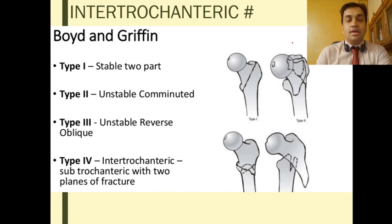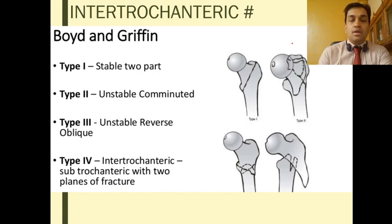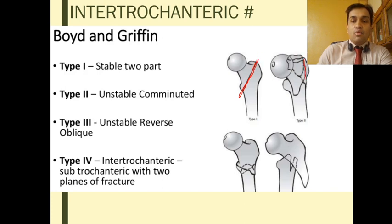A couple of classifications to learn. The first is the Boyd and Griffin classification for intertrochanteric neck femur. Type 1 is a stable intertrochanteric fracture — just a two-part proximal and distal fragment.